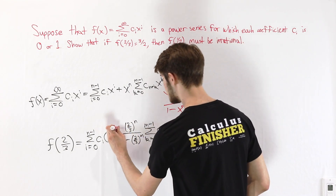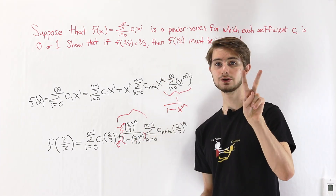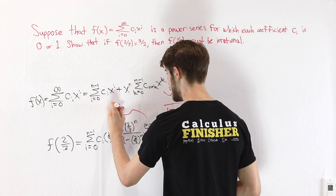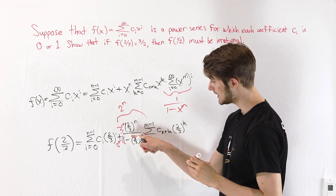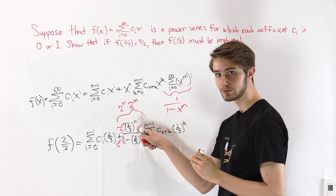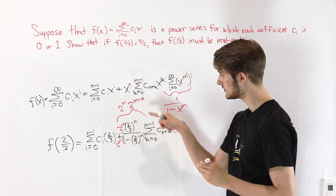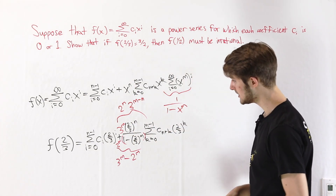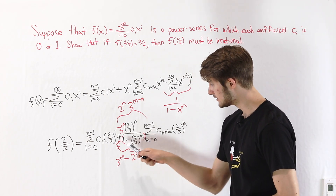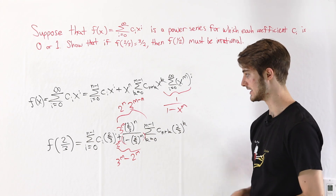On the top we have two different bases, 2 and 3. Two is only being raised to the power of n, so we get 2^n times 3^m, and then this 3 in the denominator raised to n gives 3^(-n). In the denominator, 1 times 3^m is 3^m, and then the 3^m in the numerator and denominator cancel, leaving 2^m. So our denominator becomes 3^m minus 2^m.